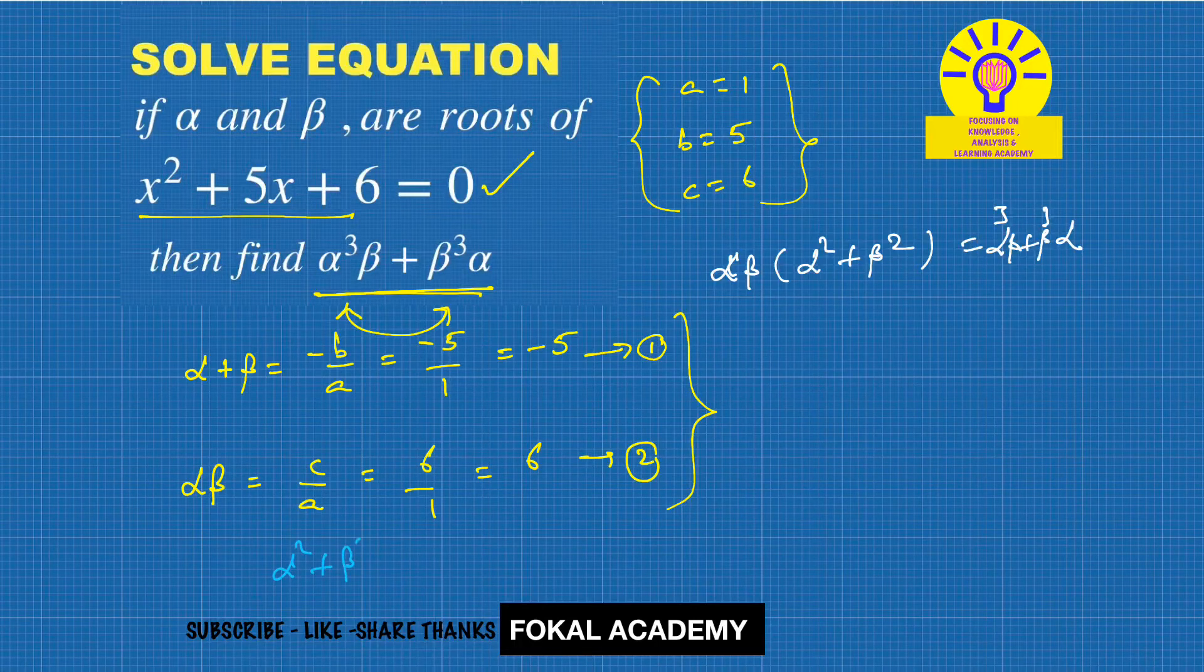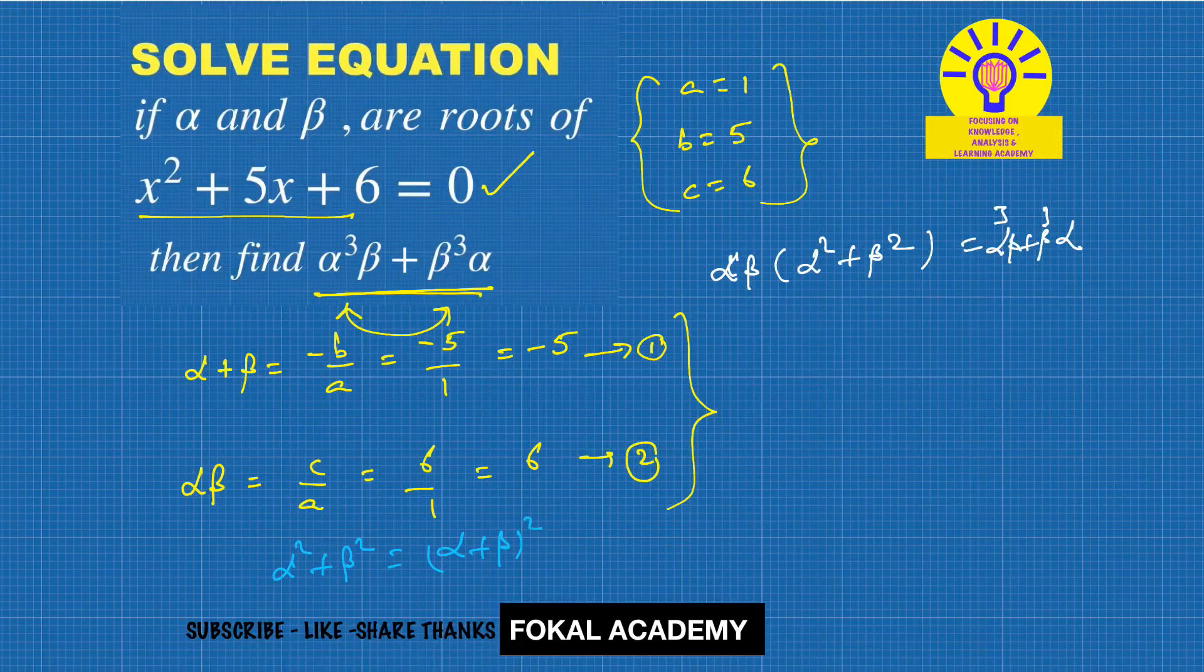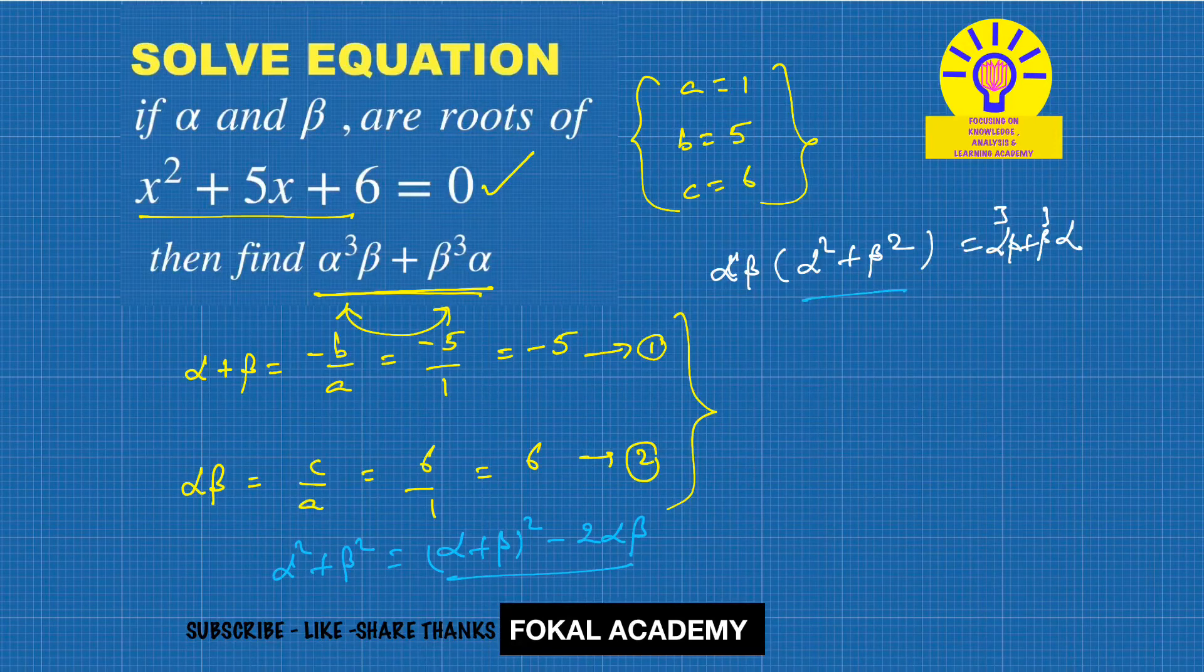α² + β² equals (α + β)² - 2αβ. By substituting this, it becomes αβ[(α + β)² - 2αβ].